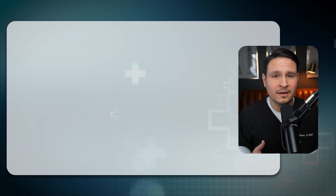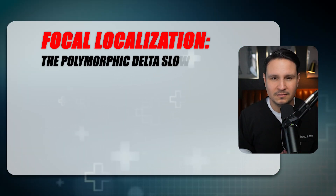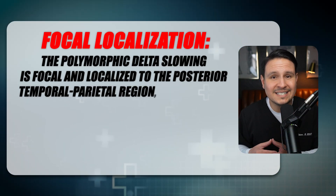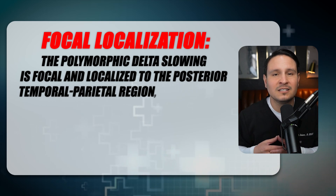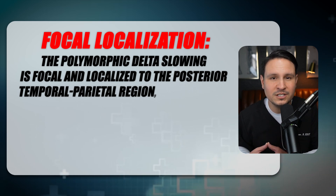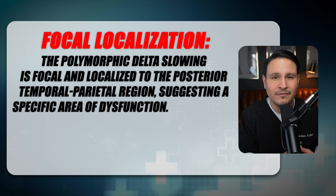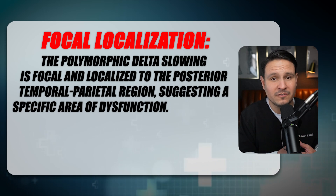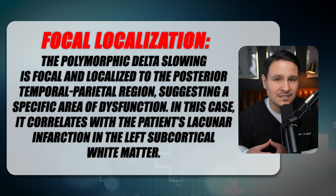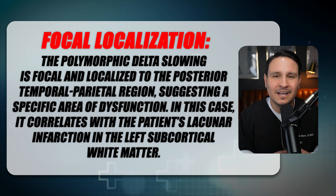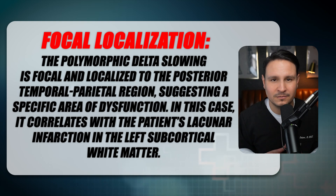Why is this EEG abnormal? Because of three unique characteristics. Number one: focal localization. The polymorphic delta slowing is focal and localized to the posterior temporal parietal region, suggesting a specific area of dysfunction. In this case, it correlates with the patient's lacunar infarction in the left subcortical white matter.